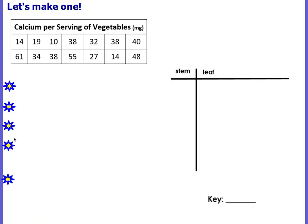Let's go ahead and make one. We have a table, and this table shows the calcium per servings of vegetables. You want to order them from least to greatest. If you look at your numbers, they're all to the tens place. So we have the tens place and the ones place, so our leaf is going to be the ones place and the stem is going to be the tens place for this particular example.